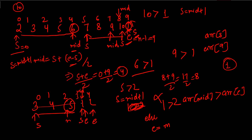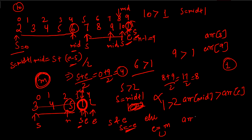We include mid in the range by setting end = mid (not mid - 1), because that element could be our answer. Now start = 3 and end = 3, so they are equal. We exit the loop and return arr[start] = arr[3] = 1 — which is the correct answer. The logic is now clear, so let's move to the coding part.